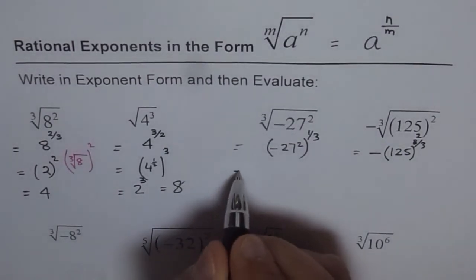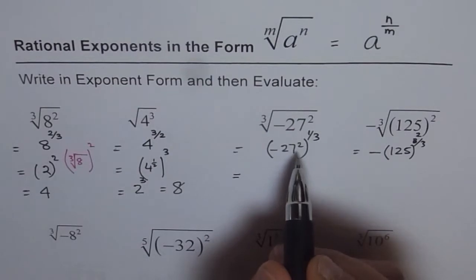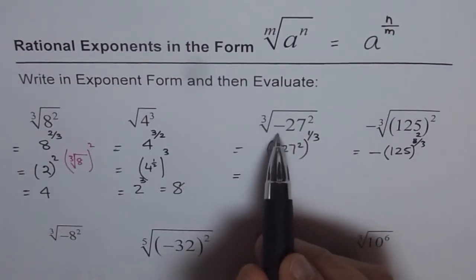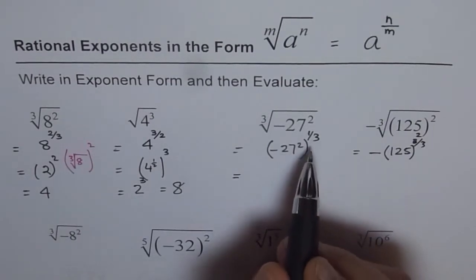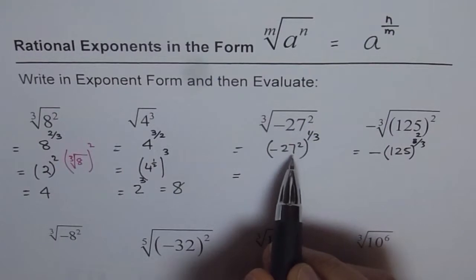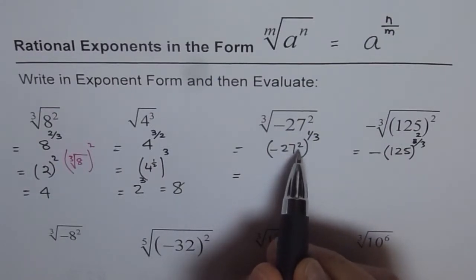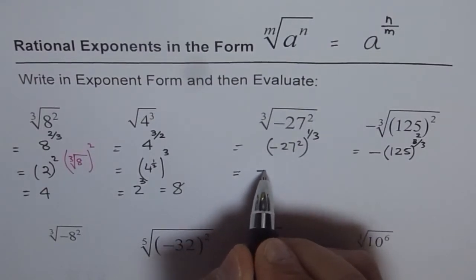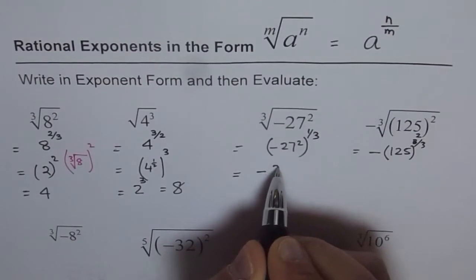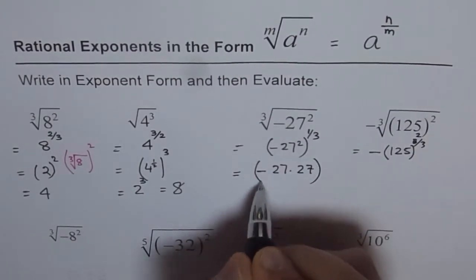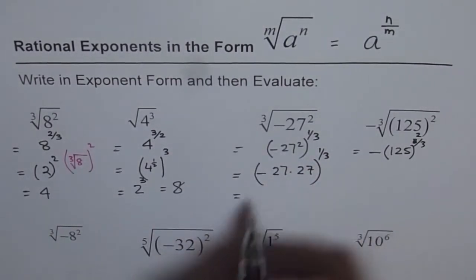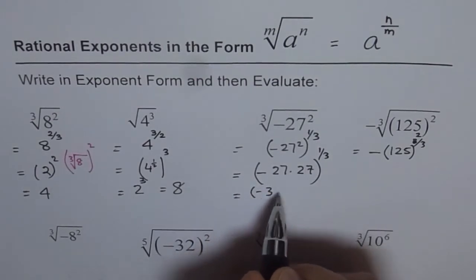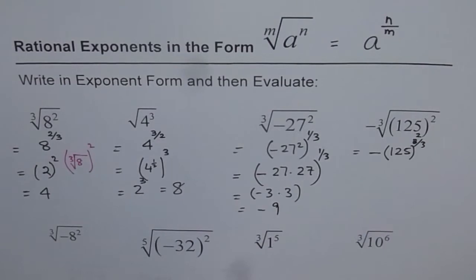Now in this particular case, remember: when I square 27 and then do the cube root, it is going to be a negative number. So this answer will actually be negative. Cube root of minus 27 is minus 3, and minus 3 squared is 9. So let's do it step by step: 27 squared is 27 times 27, minus is not squared, and we are doing the cube root. Cube root of 27 is 3, so we get minus of 3 times 3, which is minus 9.